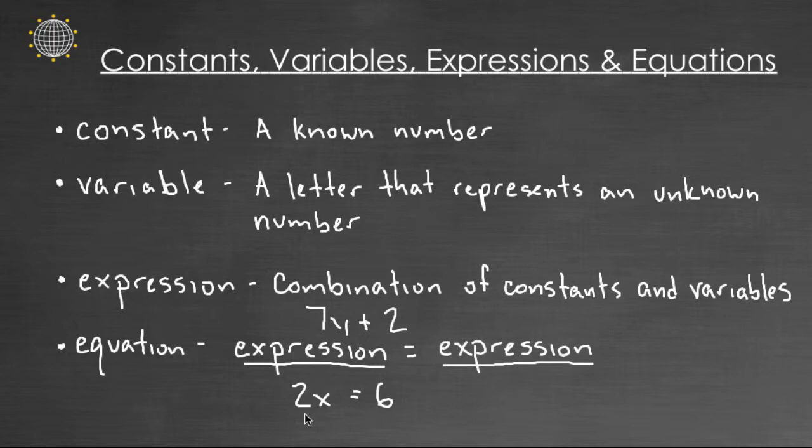For example, if x was three, the equality would be true because six equals six. But if x was anything other than three, you would not get an equality there. So equations have right and wrong answers, expressions are just a list of constants and variables and operations.